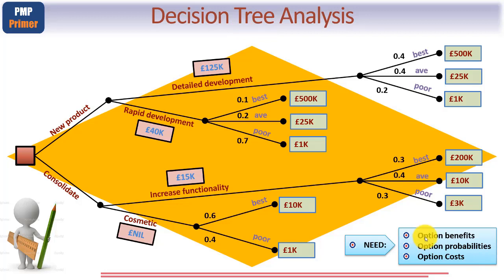But what you need to generate, either by speaking to sales and marketing or engineering, is some form of metrics. You need to know what the option benefits are, what the option probabilities are, and what the option costs are.